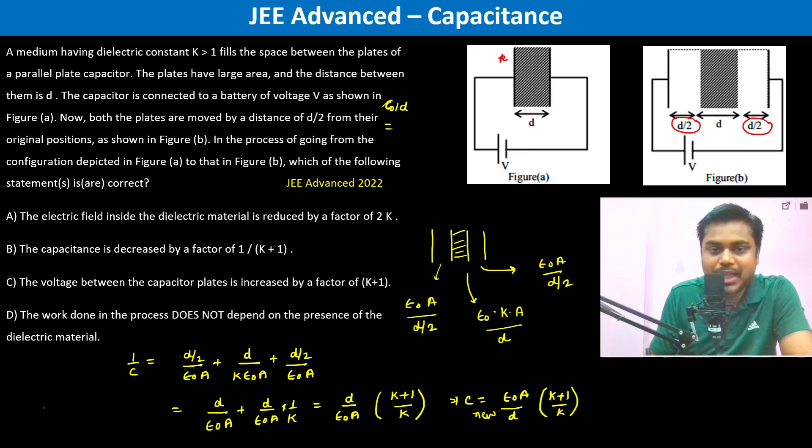Let us see the options. The electric field inside the dielectric material is reduced by 2k. So what is the electric field? Initially it was V/d, the potential difference divided by the separation. Now it is V/(2d), so it has reduced by 2, not by 2k. So this is wrong.